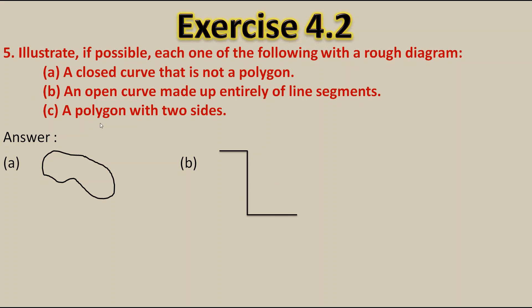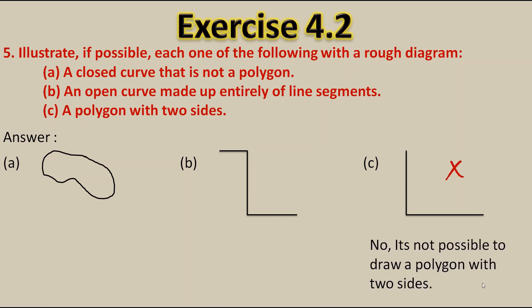The next is part C: a polygon with two sides. A polygon should be simple — it should not cross itself — it should be made up entirely of line segments, the ends should be joined, and they have told us it should have only two sides. But when we draw two sides, we can't join its ends. Therefore it is not possible to draw a polygon with two sides. Only the first two parts are possible to draw; for the third one we can't draw.